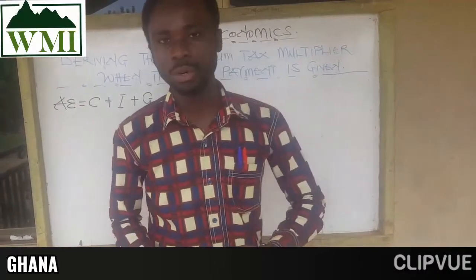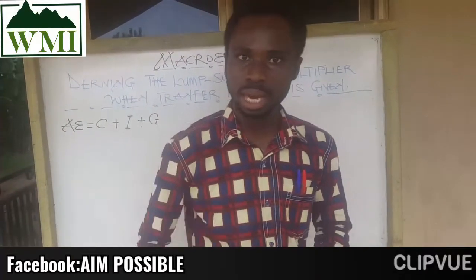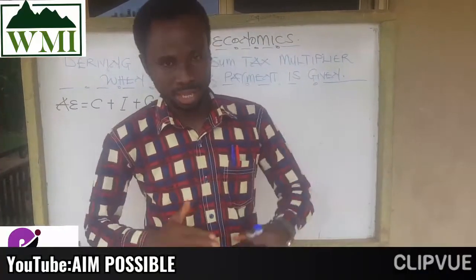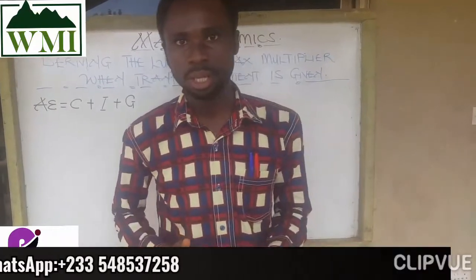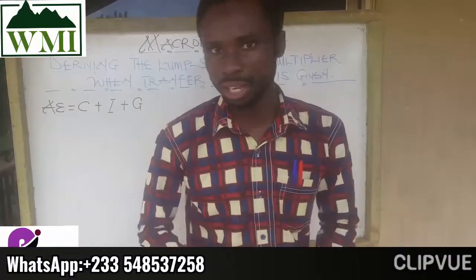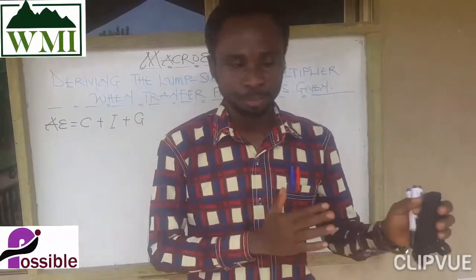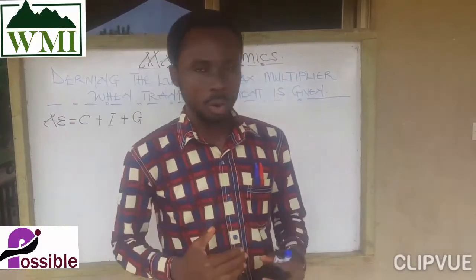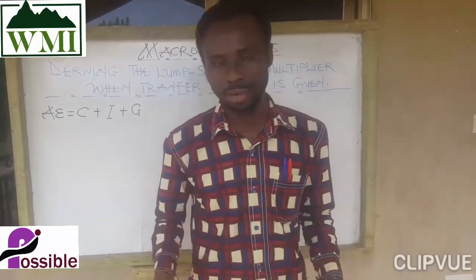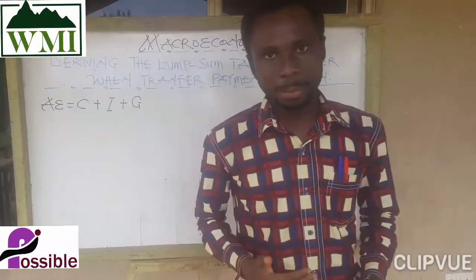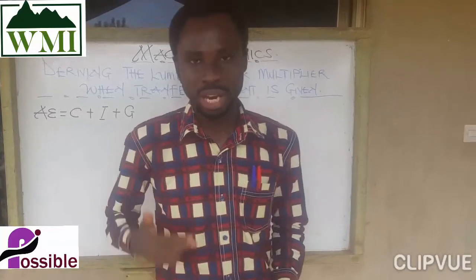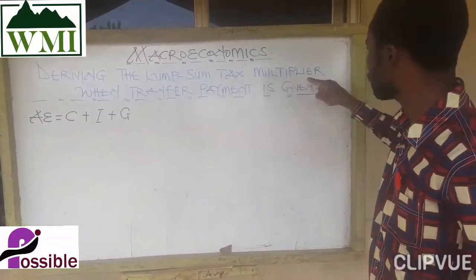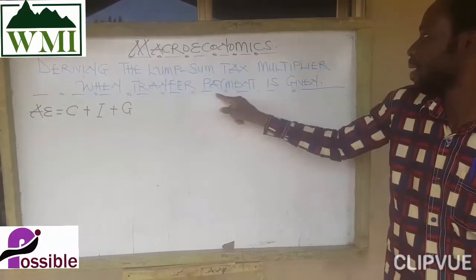In our previous lecture, we looked at how to derive the lump sum tax multiplier whereby transfer payment was not given. Transfer payment sometimes could be given and sometimes not, but it doesn't affect the multiplier or the computation of the multiplier.